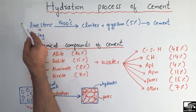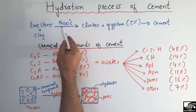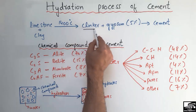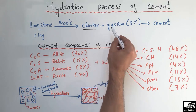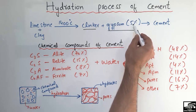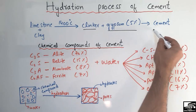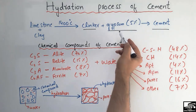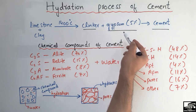Basically, limestone and clay are combined together at a temperature of 1400 degrees centigrade and they react together to form clinker. Clinker are the small gray-like particles, and then a small amount of gypsum — about five percent — is added to the clinker to form cement.